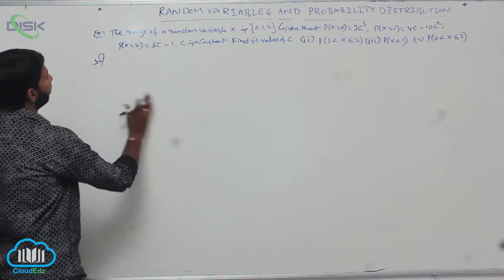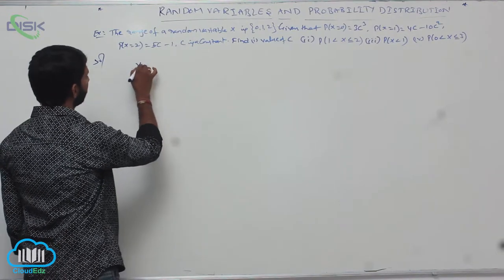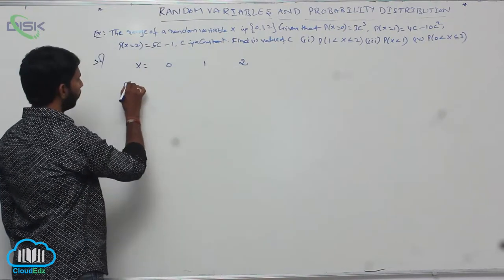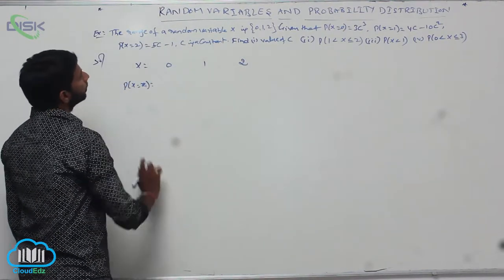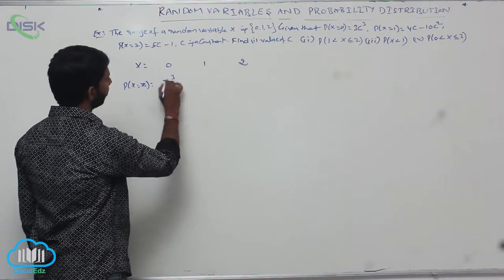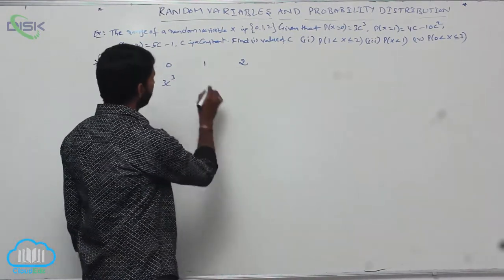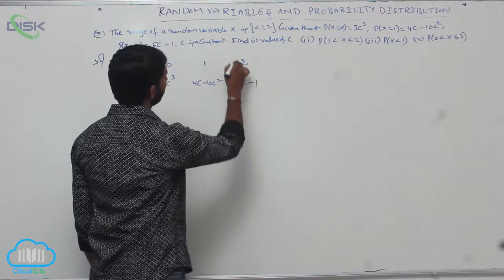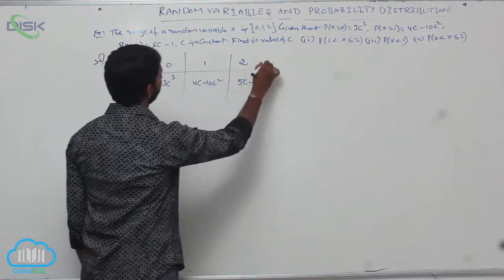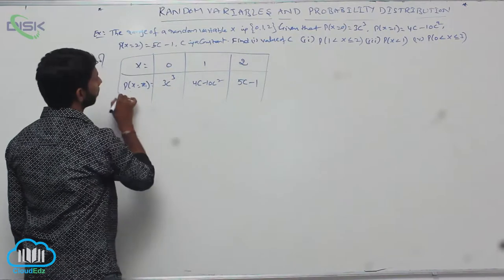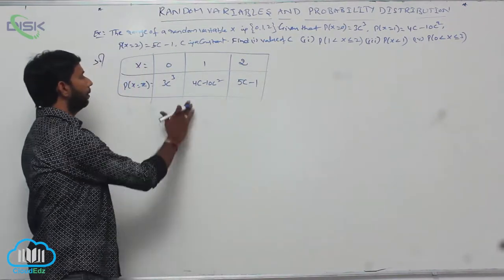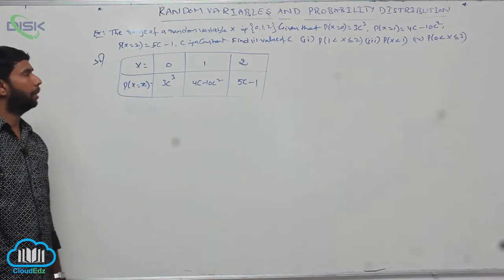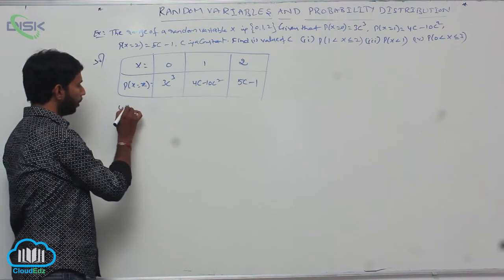First, consider the random variable X taking values 0, 1, 2 with corresponding probabilities: P(X=0) = 3C³, P(X=1) = 4C − 10C², and P(X=2) = 5C − 1. We know that the sum of all probabilities is equal to 1.